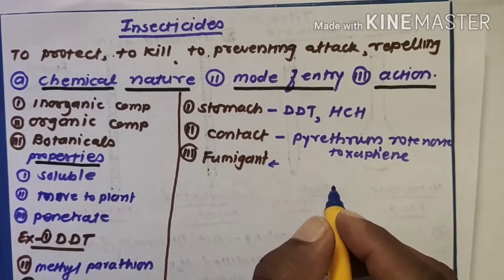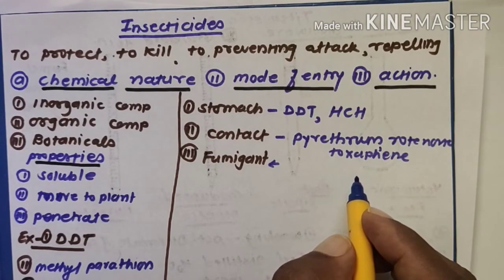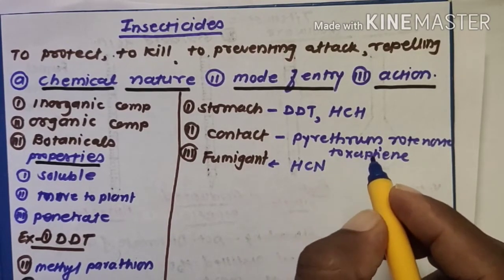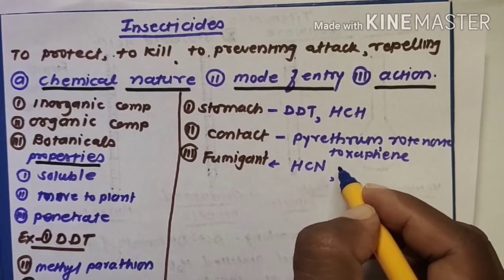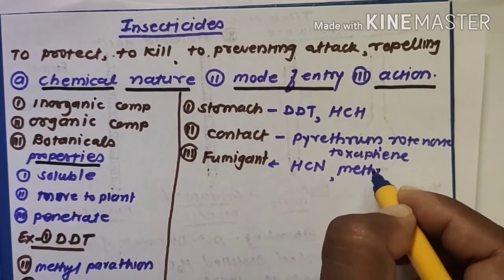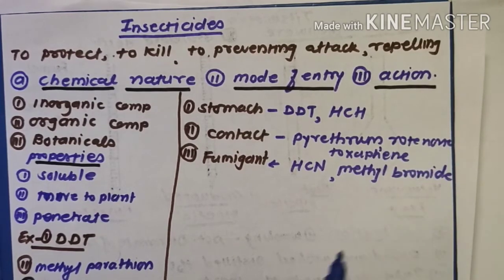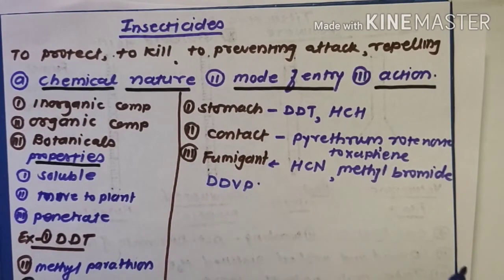Fumigants exert their action in the gaseous state to kill insects. These substances act on insects through the respiratory system, as their vapors enter through the tracheae. Examples of fumigants are ethylene CN, methyl bromide, and DDVP.